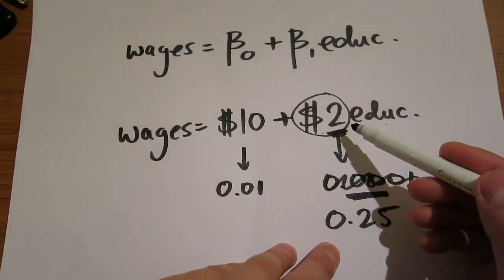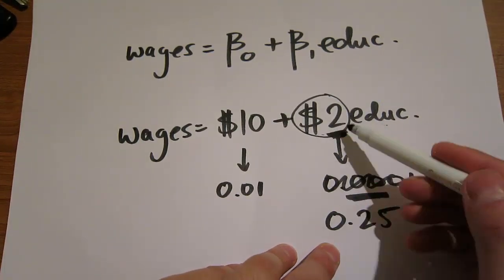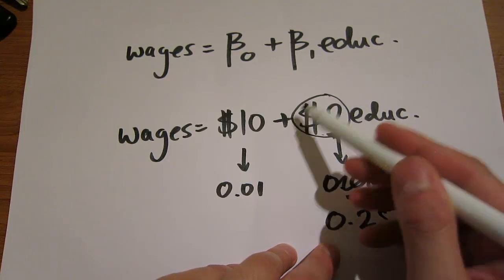This would be pretty much just a random number. If we were to resample, this number could change significantly, so we can't take it seriously.